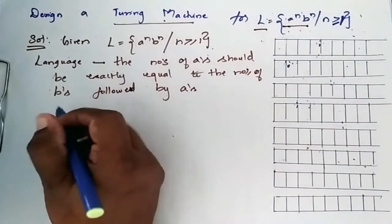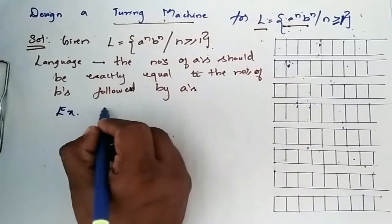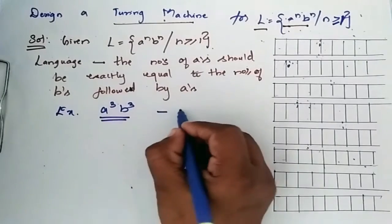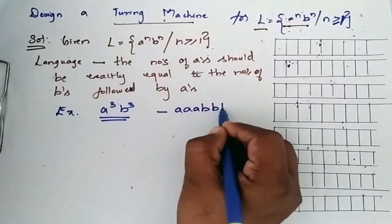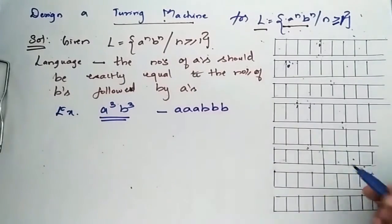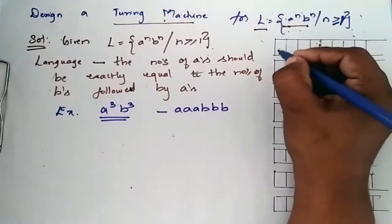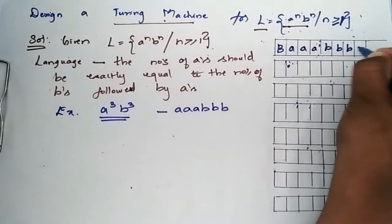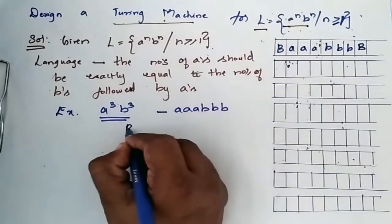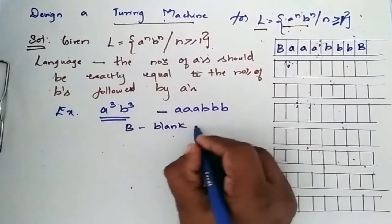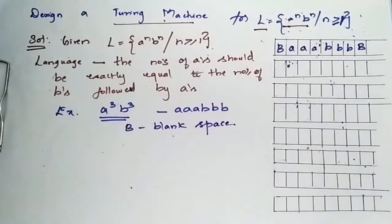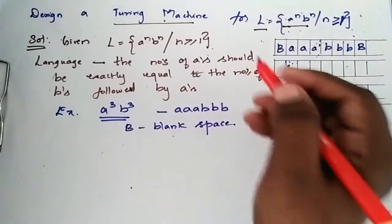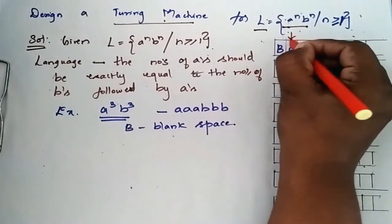Let us consider an example such that n is equal to 3. So I will get a-cube b-cube, meaning the string is a a a b b b. Now let us see how this works with the tape. In the tape you have the string like this, where b denotes the blank space.